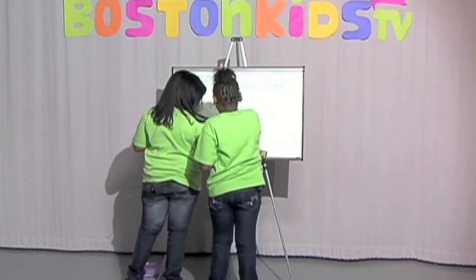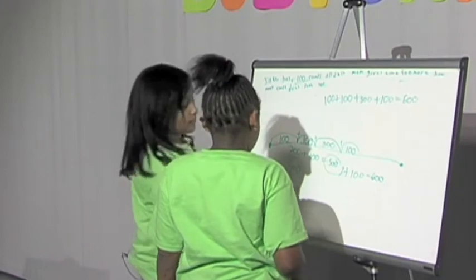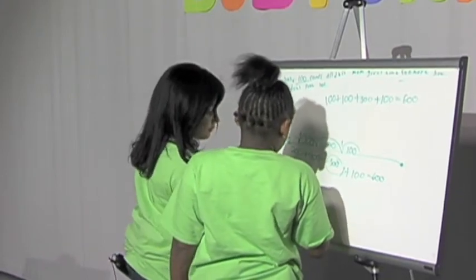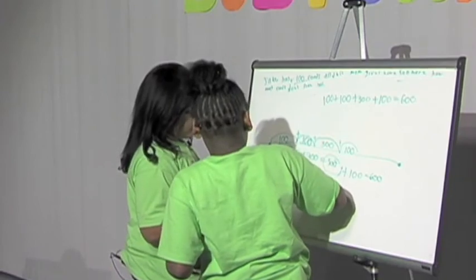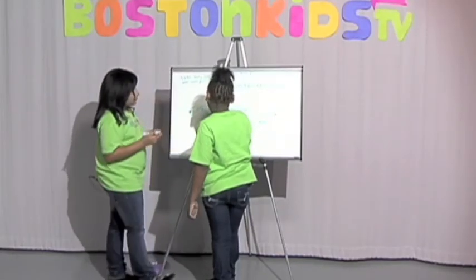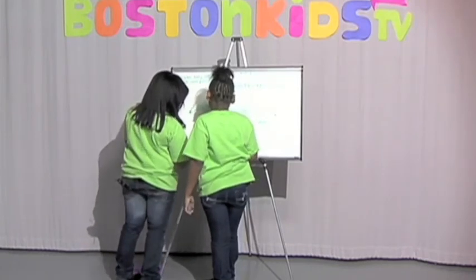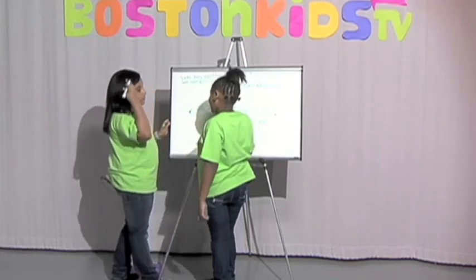100 plus, no, you do it like this. Then put the plus right here, then draw a line, and it equals 600,